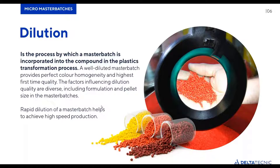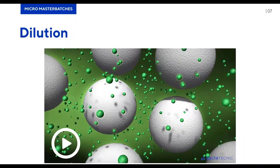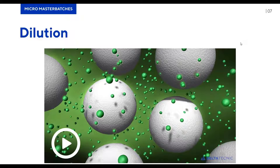Rapid dilution — increasing the speed of dilution through a quicker melting process — allows for higher-speed cable production. That is the key benefit. I'm going to run a video we have prepared which shows a simplified version of a cable manufacturing process, and I will explain how the dilution process happens with standard pellets versus small micro pellets and reduced pellets.